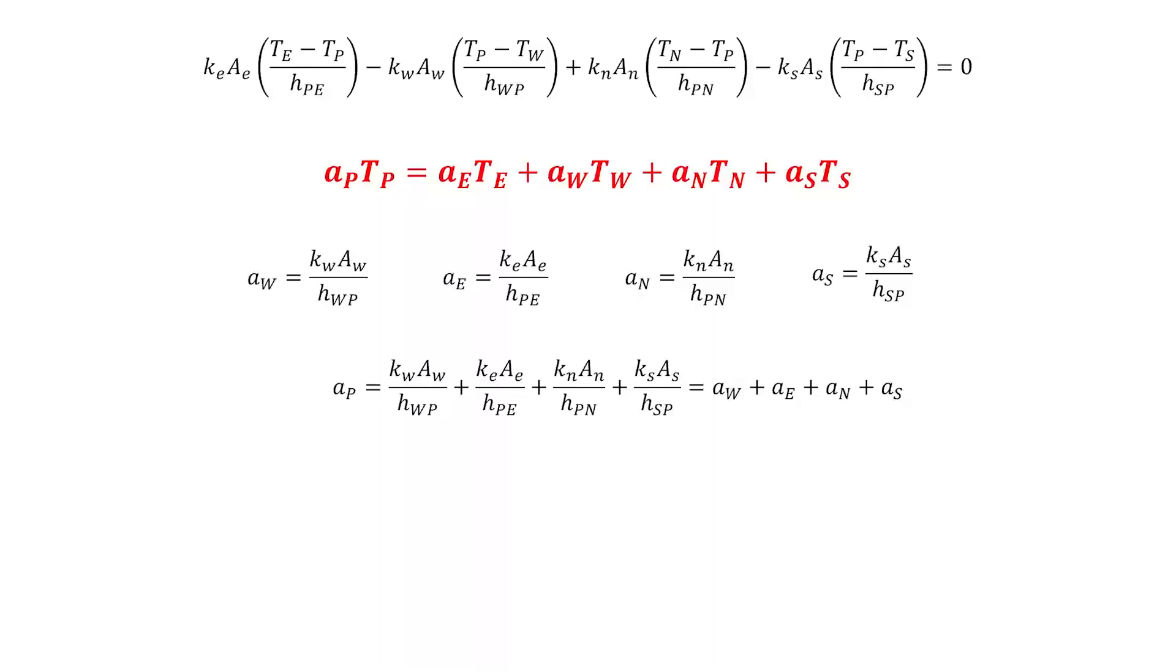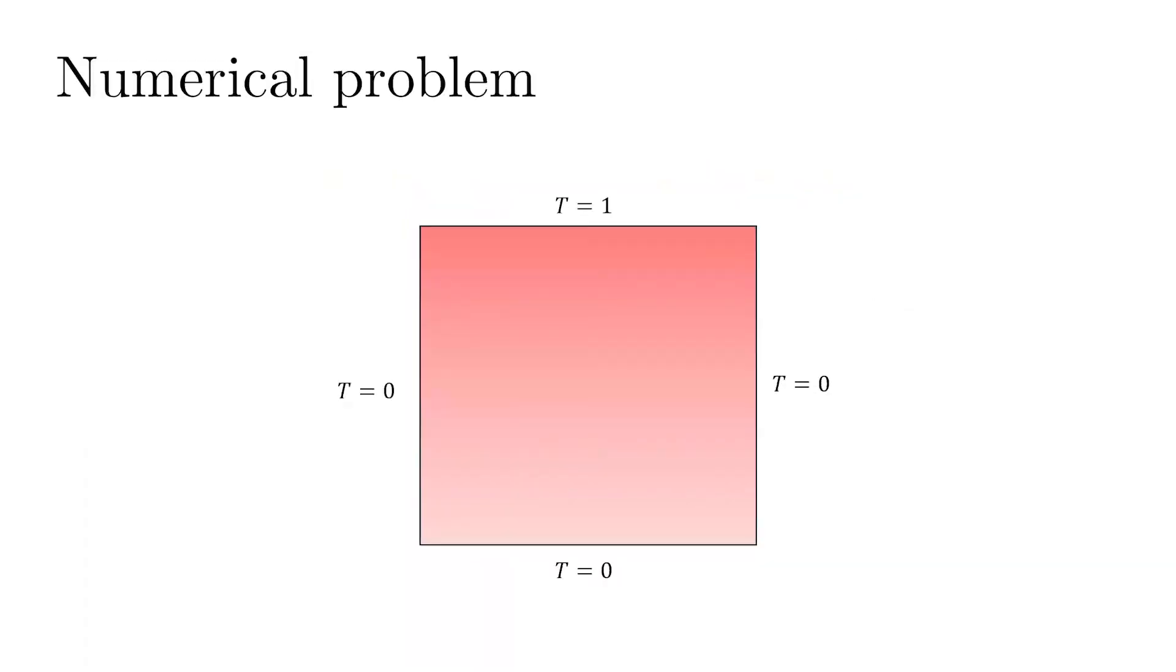This red equation is our governing equation or discretized governing equation that we would be used to solve the problem. So, the problem that we would consider is quite simple. So, it is an extension of the one dimensional problem. So, now we have a square domain, you can take any length for it and we would have three boundaries at a temperature of zero and one of the boundaries at a temperature of one. So, I am basically just trying to extend that 1D problem of zero and one.